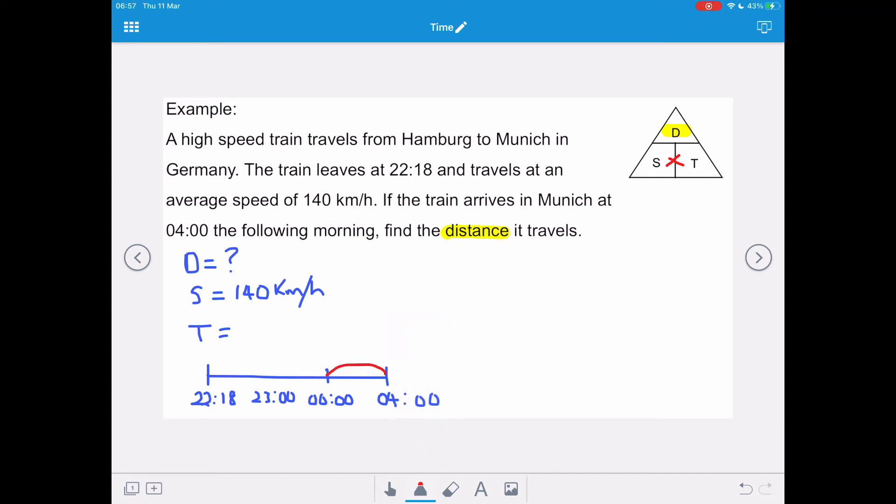So, working backwards, there's 4 hours between midnight and 4 o'clock in the morning. There's 1 hour between 11 o'clock in the evening and midnight. And there are 42 minutes between 22:18 and 23:00 hours. So we're going to add them together.